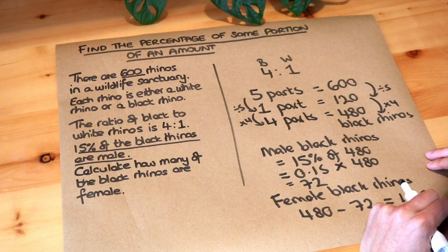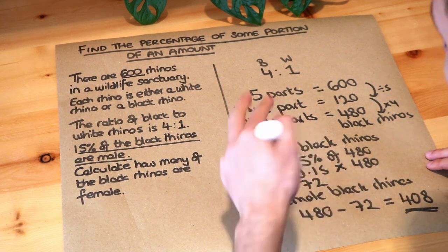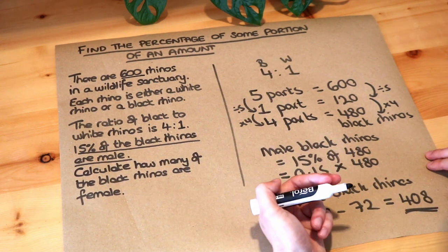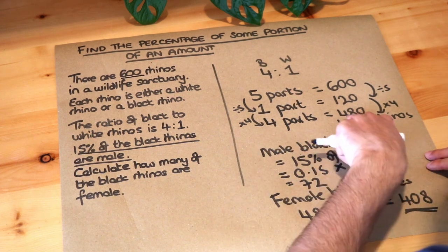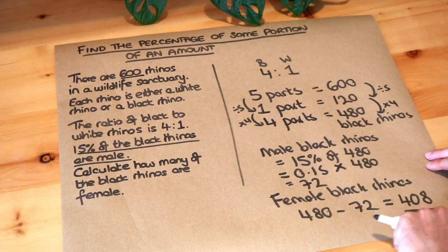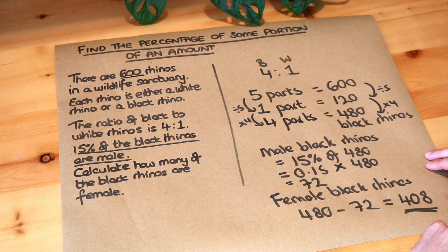As a little shortcut, we could have said if 15% of the black rhinos are male, then 85% are female. And therefore you just need to find 85% of 480. And that would have instantly given you the 408.